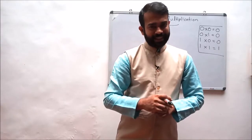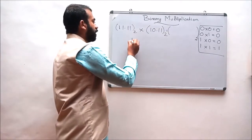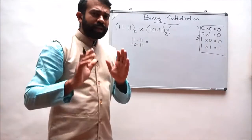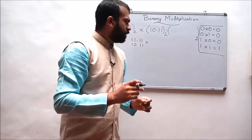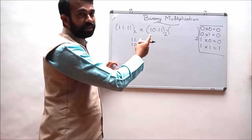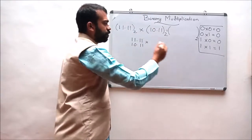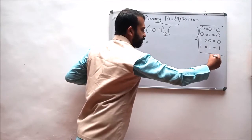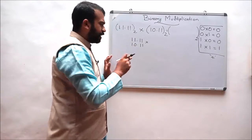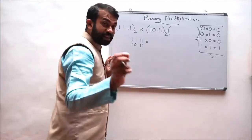Let us consider an example. The question is: multiply 11.11 with 10.11. For multiplication, first let us consider how many fractional points are total in these two different numbers. The total fractional points are 1, 2, 3, and 4 — so there are four different fractional points. Before multiplication, let us remove the fractional point, keeping in mind that we have four different fractional points.